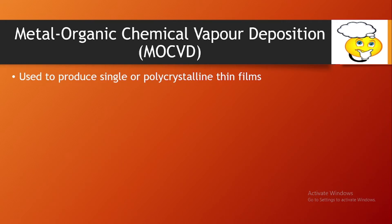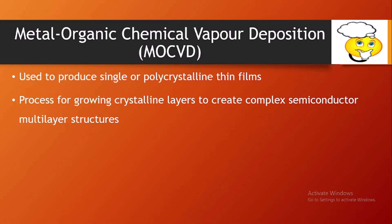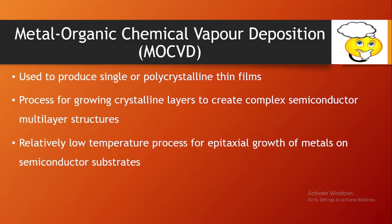It is possible to deposit metallic films using CVD techniques, not just by thermal evaporation or sputtering. MOCVD is used to produce single or polycrystalline thin films and is a process for growing crystalline layers to create complex semiconductor multi-layer structures. It is a relatively low temperature process ranging between 200°C to 800°C, especially for epitaxial growth of metals on semiconductor substrates — layer by layer or atom by atom.